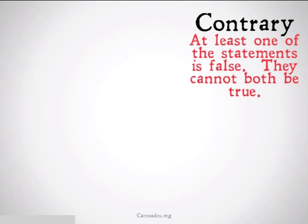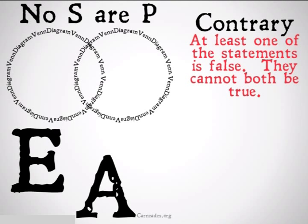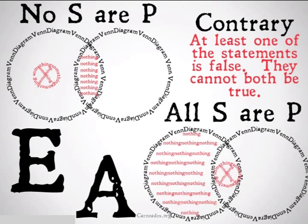Contrary is the relation where at least one of the statements is false — they can't both be true. The example of contrary is E and A statements: No S are P, we set up our diagram, and All S are P, we set up our diagram.